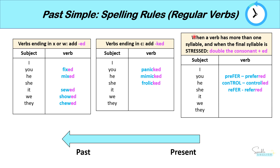And finally, when a verb has more than one syllable and the final syllable is stressed, we double the consonant and add ED. So if you listen to how I say prefer, you can hear that the second syllable is stressed — I say prefer. And because I'm stressing the final syllable, we double the R and add ED.